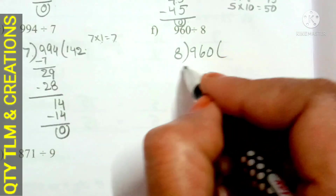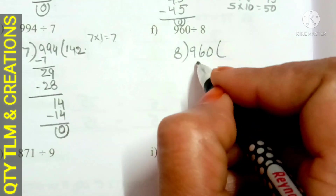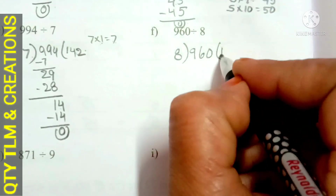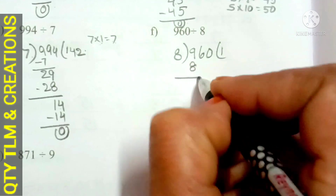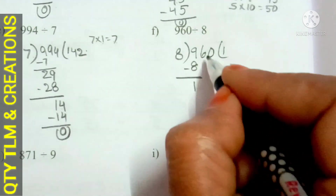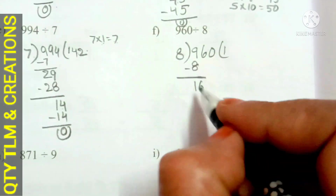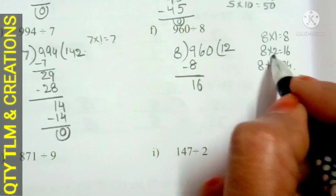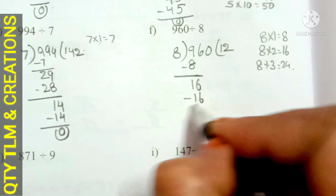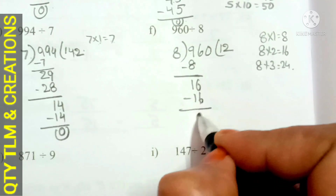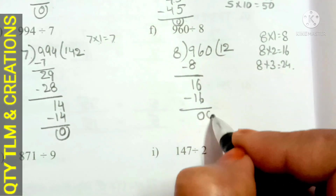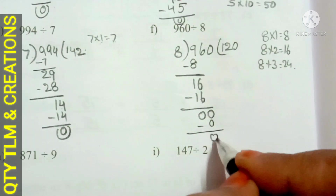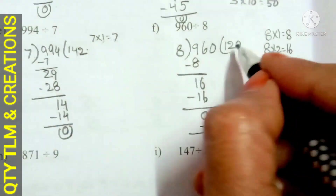Next, F. 960 divided by 8. We start division from the highest place value, which is 9. 8 divides 9 for 1 time; 8 ones are 8. Subtract 8 from 9, we get 1. Bring down 6: 16. 8 divides 16 for 2 times; 8 twos are 16. Subtract, we get 0. Bring down 0. 8 cannot divide 0, so write 0. Remainder is 0, quotient is 120.